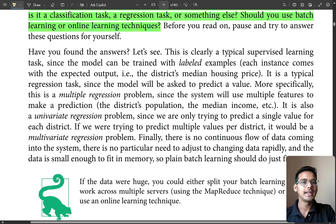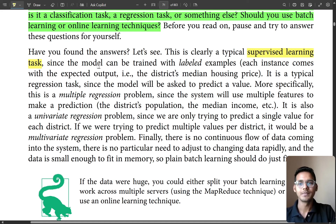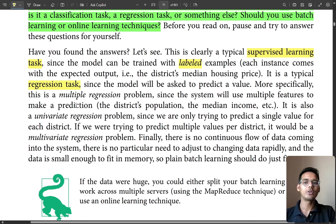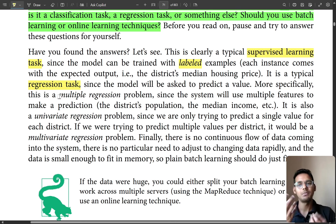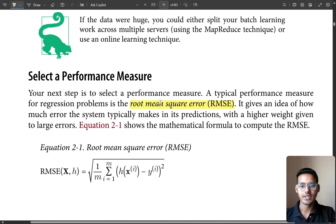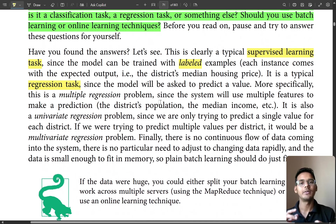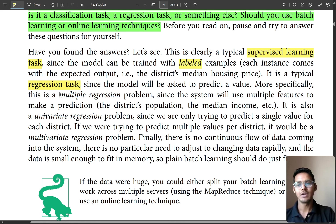For this project, it is clearly a typical supervised learning task, since the model can be trained on labeled examples. It is also a regression task because we are predicting prices. Within regression, since there are multiple variables — median price, proximity to the beach, latitude, longitude, and more — it is a multiple regression problem.